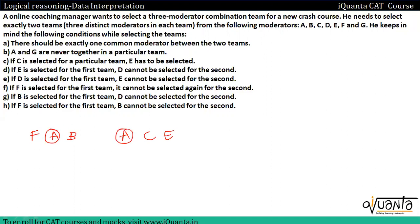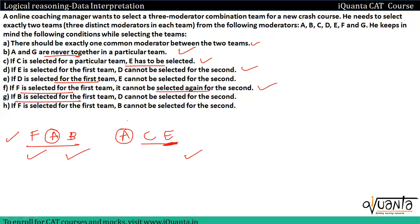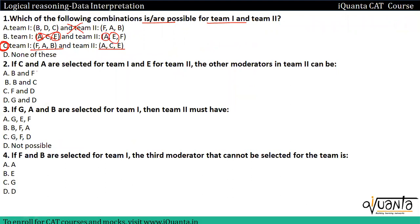Third option: FAB and ACE. The common moderator is A. A and G are never together — correct. C is selected, so E has to be selected — correct. E is here in the first team, so D cannot be in the second — D is not there, correct. F is in the first team, so it cannot be selected again for the second — correct. B is in the first team, so D cannot be in the second — correct. F is in the first team, so B cannot be in the second — B is not there, correct. So the answer to this question is option number C.